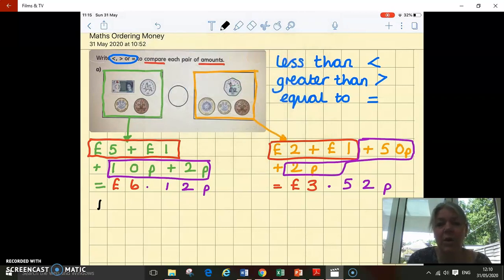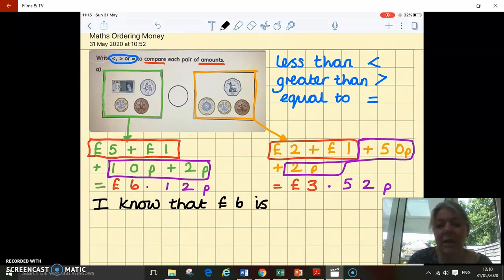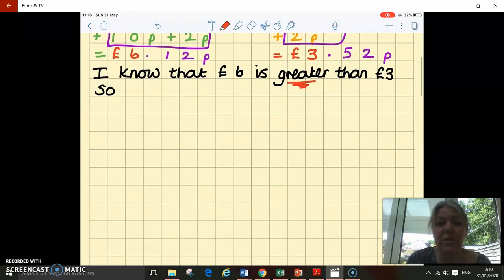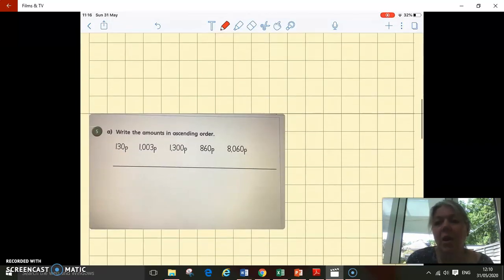So I've got my two totals which means I can compare them. I know that £6 is greater than £3 because 6 is greater than 3 on a number line. So I'm going to look for the greater than symbol and add it into the little circle. There are lots more questions like this for you to have a go at on your sheet.